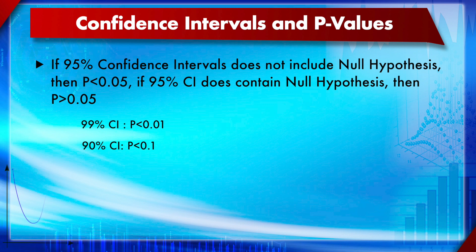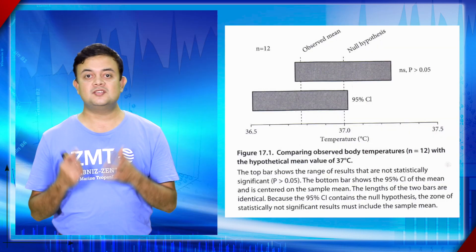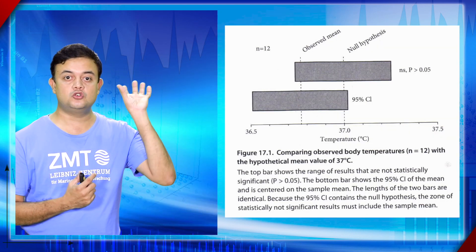The same logic applies at other confidence levels. For a 99% confidence level, a 99% CI is equivalent to a p-value less than 0.01, while a 90% CI is equivalent to a p-value less than 0.1. You can see these ranges plotted in the graph.